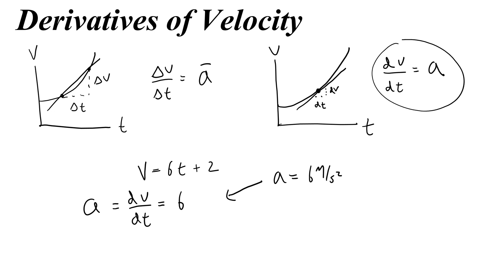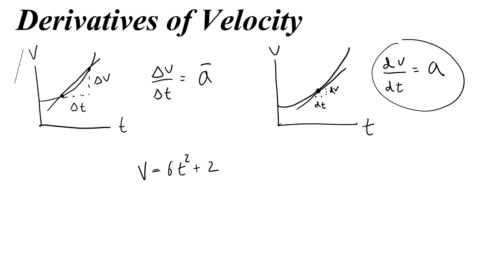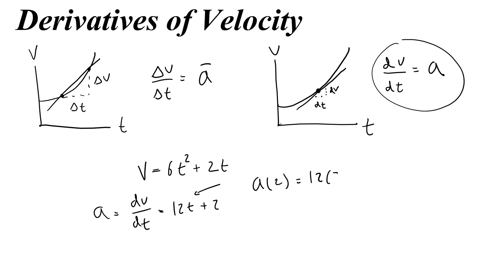Of course, if we had a velocity function that was squared — say 6t squared plus 2t — then its derivative would be 12t plus 2. If I wanted to find the acceleration at 2 seconds, I would plug in: 12 times 2 plus 2 is 24 plus 2, so 26 meters per second squared. That's how you use the derivative of a velocity function with respect to time to find the acceleration.